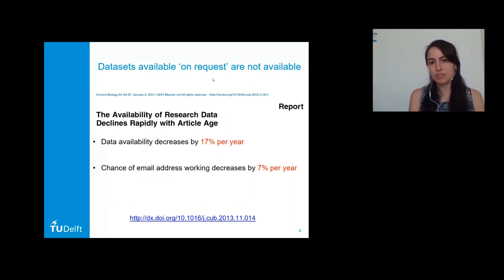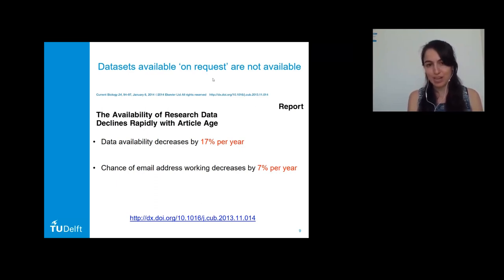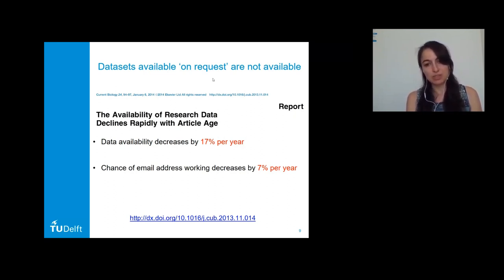Looking at current culture around datasets: many publications include statements such as 'data sets are available upon request.' A recent study found that data claimed to be available is actually not — availability decreases 17% per year, and the chance of the email address working decreases 7% per year. This is not surprising given that in academia researchers frequently change institutes, countries, and email addresses.